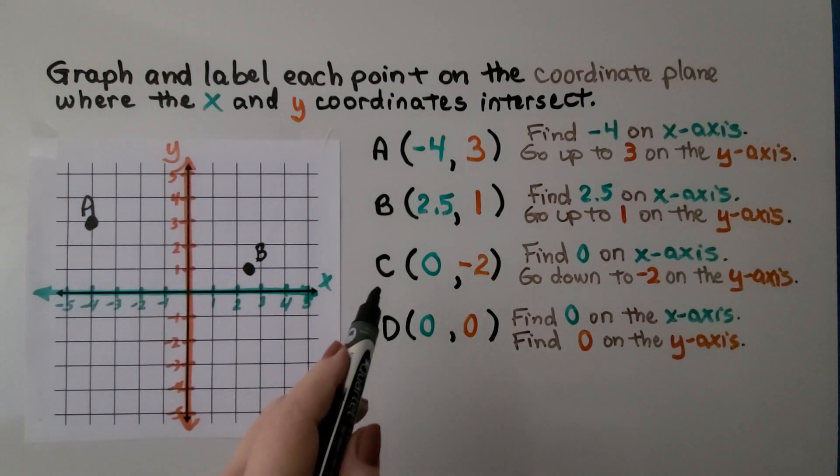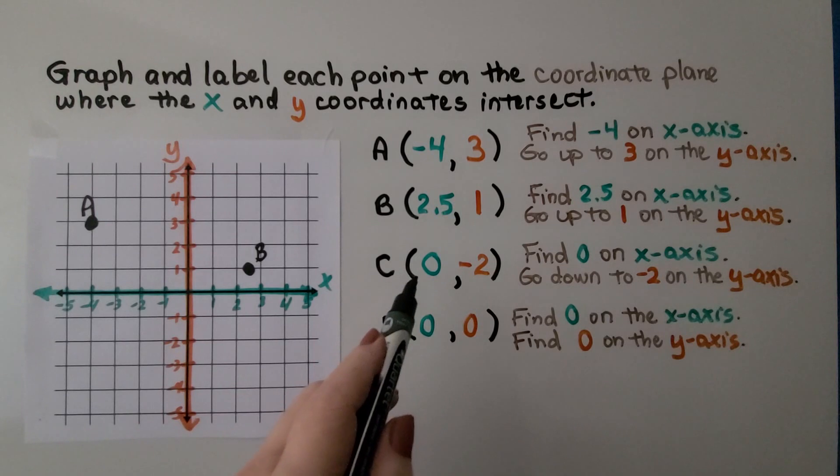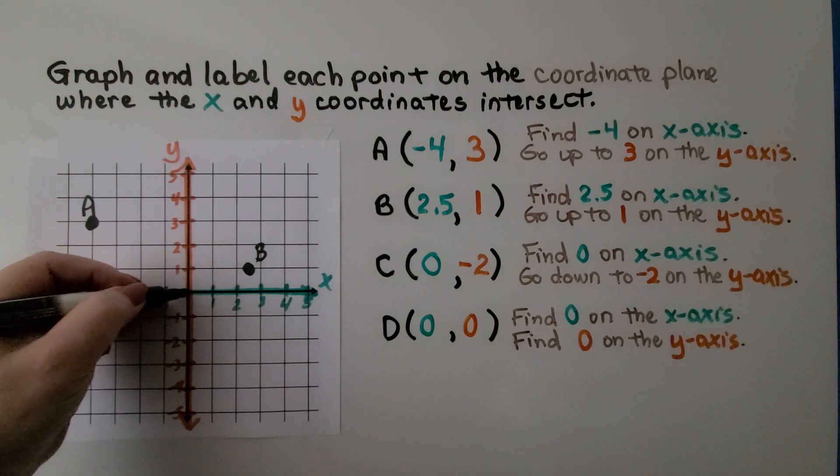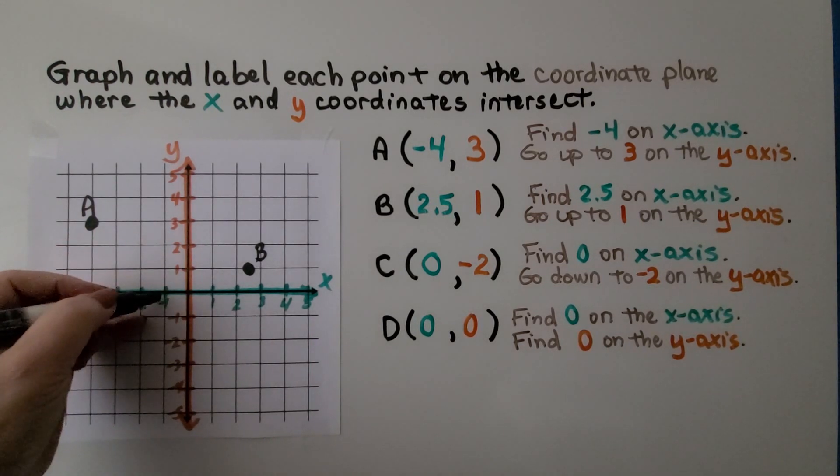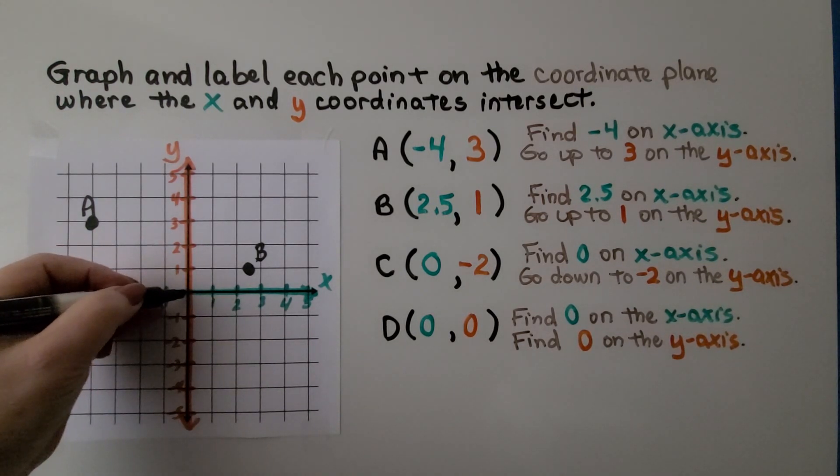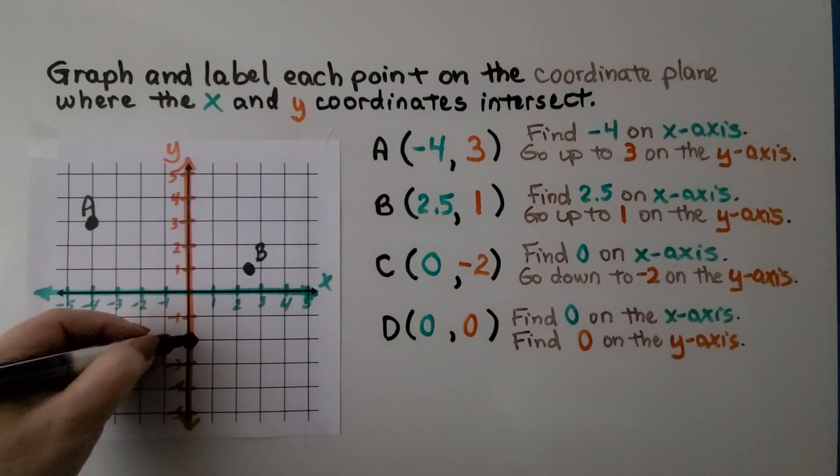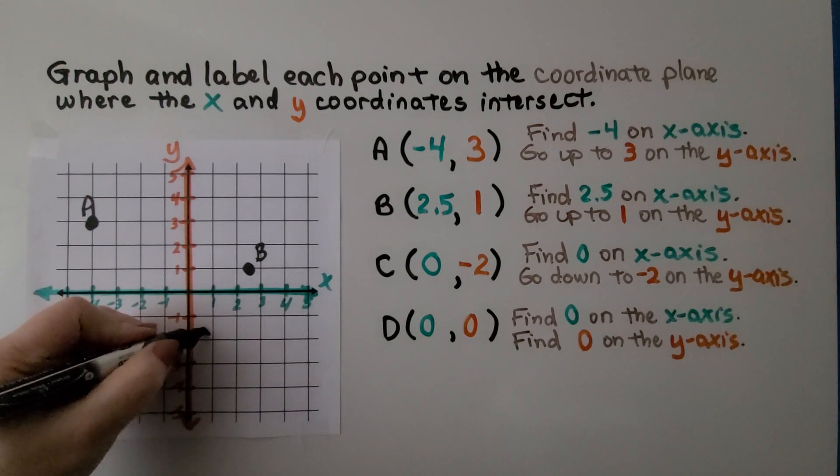For C, it says it's at zero on x and negative two for y. So we're going to find zero on x, which is right here, in between the negative one and the one. And now we need to go to negative two. Negative one, negative two. That would be right here. That is point C.